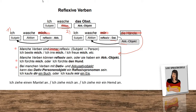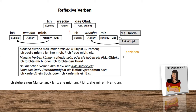I know this is a little bit confusing. Let's give an example. We have the verb 'anziehen' — to wear something or to put something on. The normal version is a subject-verb-object sentence: 'Ich ziehe einen Mantel an' — I'm putting on a coat.